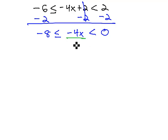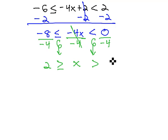We continue solving, just like always, to get the x alone by dividing by -4. And again, we must divide all three parts by the -4. Notice, dividing by a negative requires us to flip the inequality symbols the opposite directions. We now have 2 is greater than or equal to x, which is greater than 0.